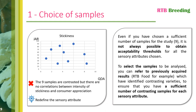In order to know which samples you can select for analysis, you can refer to results acquired previously during the RTB food project, for example, which enabled you to identify contrasting varieties. This will ensure you have a sufficient number of contrasting samples for each sensory attribute.